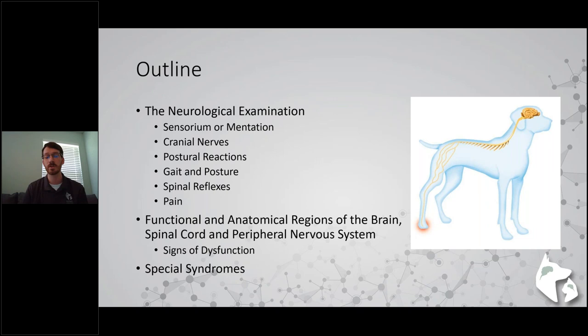The next section we'll go through is the functional and anatomical regions of both the brain and the spinal cord, as well as the peripheral nervous system. We'll discuss what types of signs of dysfunction we can see if certain parts of the brain or spinal cord are affected, and that will help us achieve that localization. At the end, we'll also go over some special syndromes - things that look very strange but can help you pinpoint a lesion.